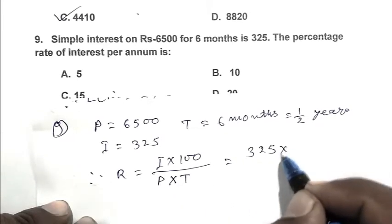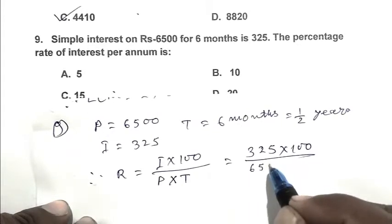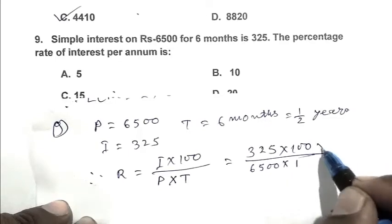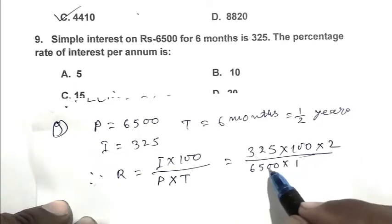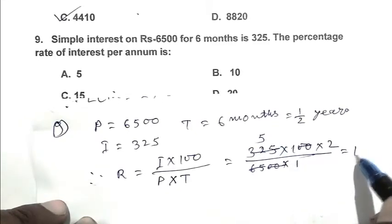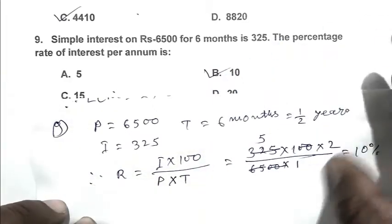Rate equals interest multiplied by 100 divided by principle multiplied by time. 325 multiplied by 100 divided by 6,500 multiplied by half, that gives 10. So, B is the right answer.